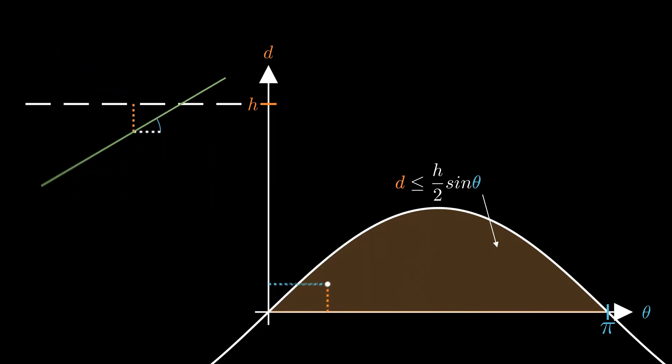In other words, this shaded region represents all the combinations of d and theta where the needle crosses the line. And anywhere outside this region is where the needle does not cross the line.